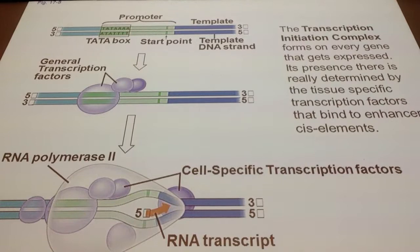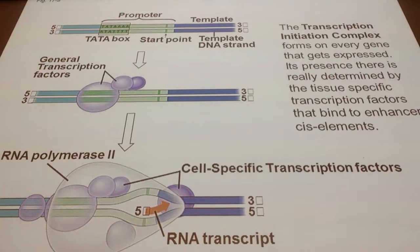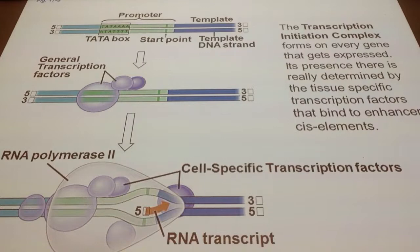A perfect example: muscle cells. There is a tissue-specific transcription factor called MyoD. Only stem cells or skeletal muscle cells would produce MyoD, and MyoD would only bind to the MyoD response elements. Therefore, only the genes that contain the MyoD response elements are turned on — and those are turned on only in muscle stem cells or muscle cells because of the specificity with MyoD. So specificity is not only at the level of cell-specific transcription factors, but also in terms of the presence of response elements in the gene itself.